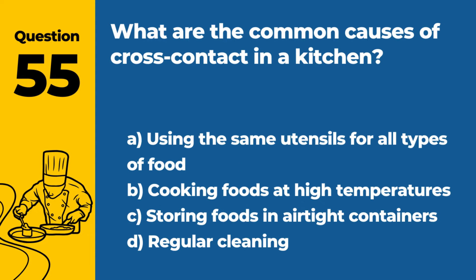Question 55. What are the common causes of cross-contact in a kitchen? a. Using the same utensils for all types of food. b. Cooking foods at high temperatures. c. Storing foods in airtight containers. d. Regular cleaning. Answer a. Using the same utensils for all types of food. Common causes of cross-contact in a kitchen include using the same utensils, cutting boards, or surfaces for different types of food, particularly between allergenic and non-allergenic foods.